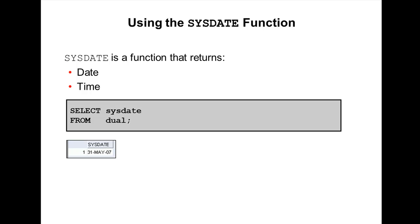What is this SYSDATE function? SYSDATE is a function that returns date and time. You can use SYSDATE as you would use any other column name. For example, you can display the current date by selecting SYSDATE from a table. It is customary to select SYSDATE from a dummy table called dual.